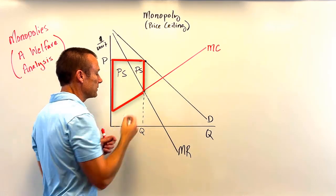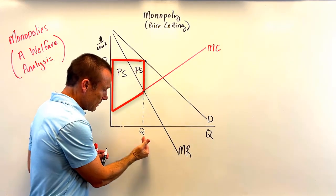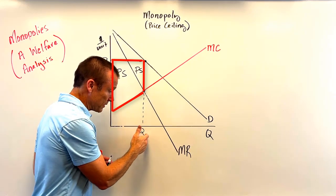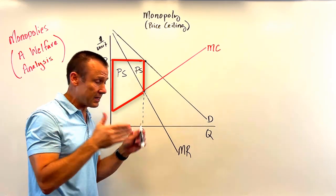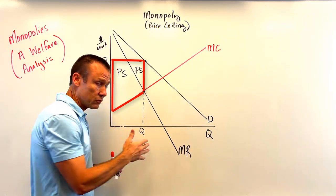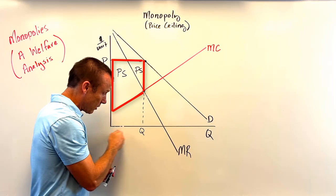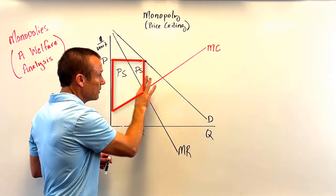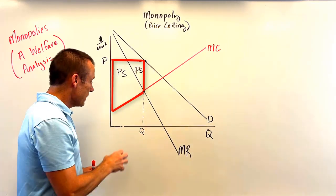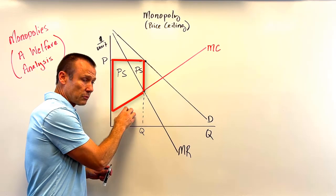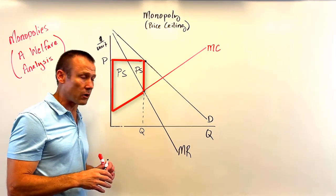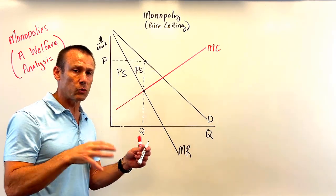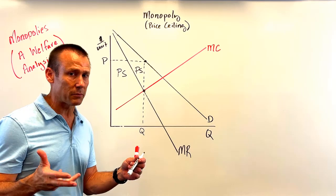Nothing will be produced to the right of Q, so there's no surplus to anyone to the right of Q — you can't have surplus where there's no good being produced. And of course no surplus exists underneath the marginal cost curve.